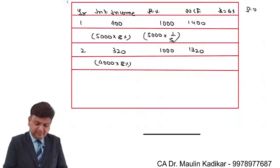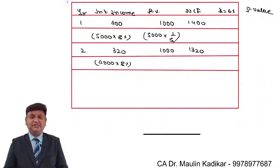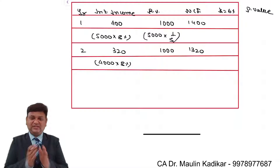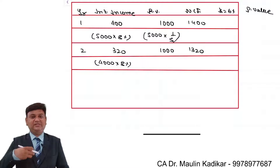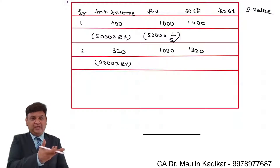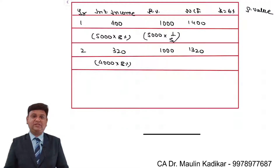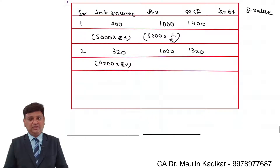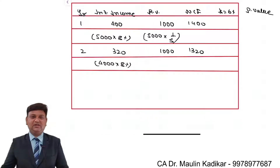We will compute the present value by discounting the future cash inflow series at 6%. The sum of the present values of all future cash inflows gives us the price that the investor is ready to pay for the security. This is the way we are required to calculate the answer.